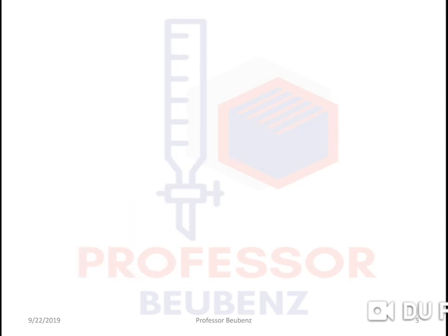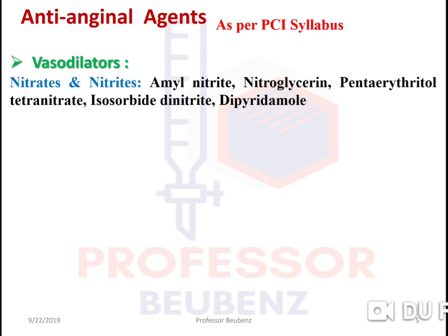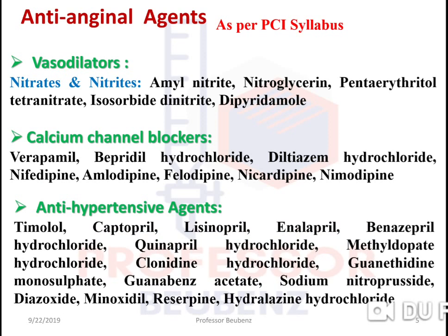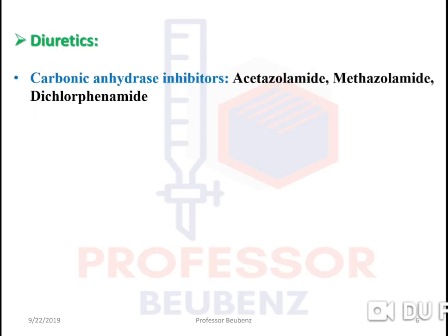As per the PCI syllabus, anti-anginal agents are classified as: vasodilators, which include nitrates and nitrites — examples are amyl nitrate, nitroglycerin, etc.; calcium channel blockers such as verapamil, bepridil, diltiazem, nifedipine, amlodipine, etc.; and antihypertensive agents like atenolol, captopril, lisinopril, etc.